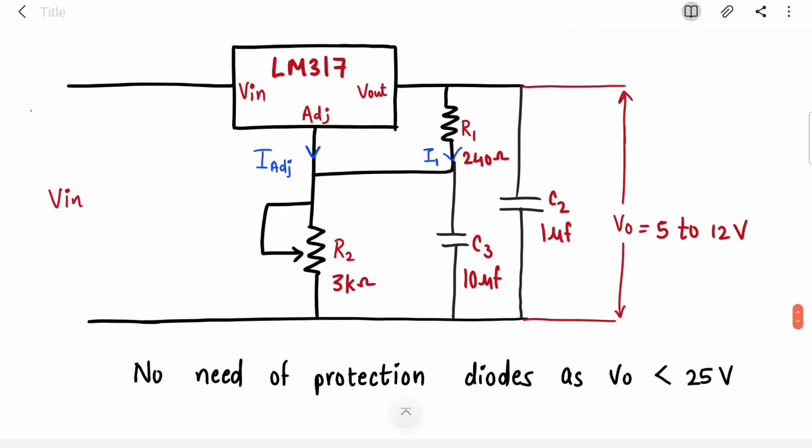The last step for the design numerical is to redraw this connection diagram with all the updated values. R2 is 3k, R1 is 240 ohms. For capacitors, I took some random microfarad values like 10 microfarad and 1 microfarad.